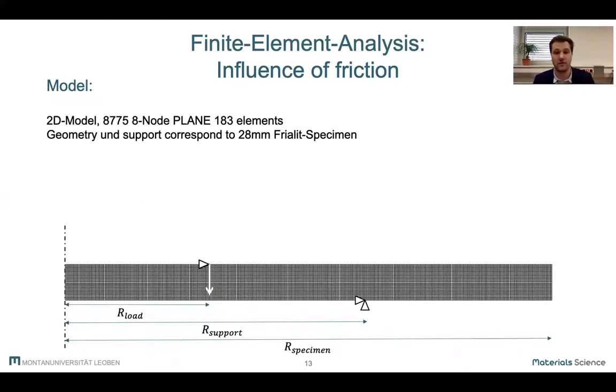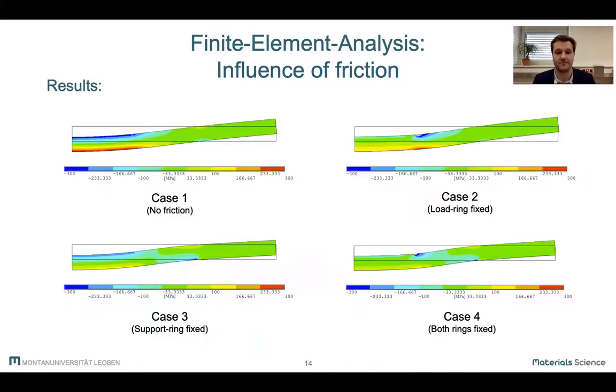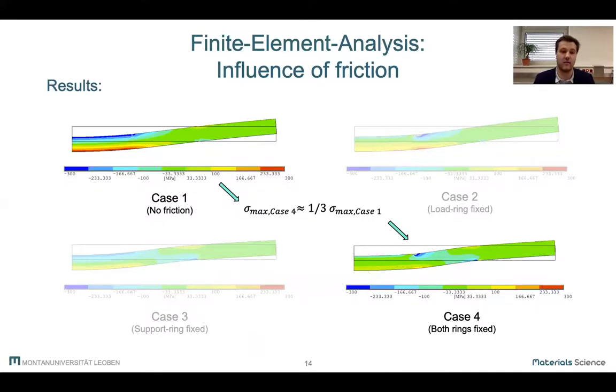Since we do not know the coefficient of friction between sample and ring, we looked at four extreme cases with the assumption that the real conditions would be somewhere in between. The first case we simulated was with no friction at all, meaning that all the horizontal movement was allowed on both contact points. Then we completely fixed the loading ring to the sample by limiting the horizontal movement at load introduction to zero. Then we did the same thing just for the supporting ring and finally we fixed both rings horizontally. These are the results for each case. The large difference in maximum stress between case one with no friction and case four with both rings fixed shows the maximum stress decreases to about one third if friction is taken into account.